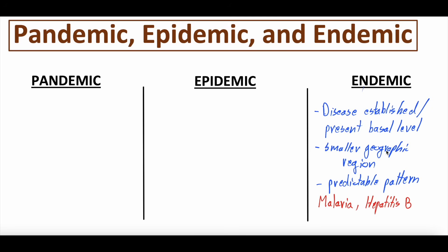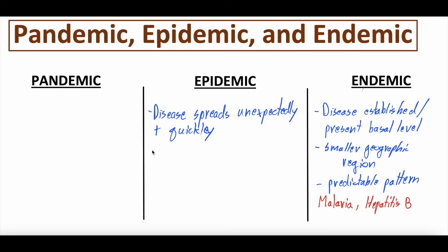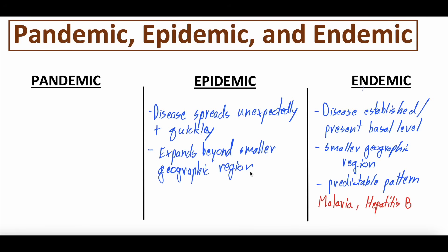In comparison, an epidemic is when a disease starts to spread unexpectedly or quickly. This is a disease that maybe was endemic — or maybe was not even endemic — and just took hold in a population. It usually expands beyond a smaller region but is still geographically contained. For example, it might spread from part of one state to multiple states in the U.S.A. The pattern here is often unpredictable, as it spreads rapidly and takes hold in unexpected areas.